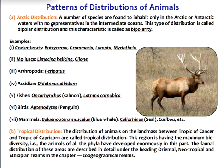The first pattern is called bipolar distribution. In this case, a number of species are found to inhabit only the arctic or antarctic waters, with no representatives in the intermediate oceans. This kind of distribution is called bipolar distribution, and this characteristic is called bipolarity.